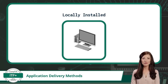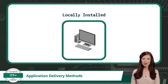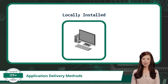Our first application delivery method is locally installed. This is a perfect method to use with standalone or one-tier applications. The application files and data are stored directly on your local computer's hard drive. When you use the application, it fetches and processes the data from your device. There is no specific network requirement, and once installed, you can also use it offline without a need for an internet connection.